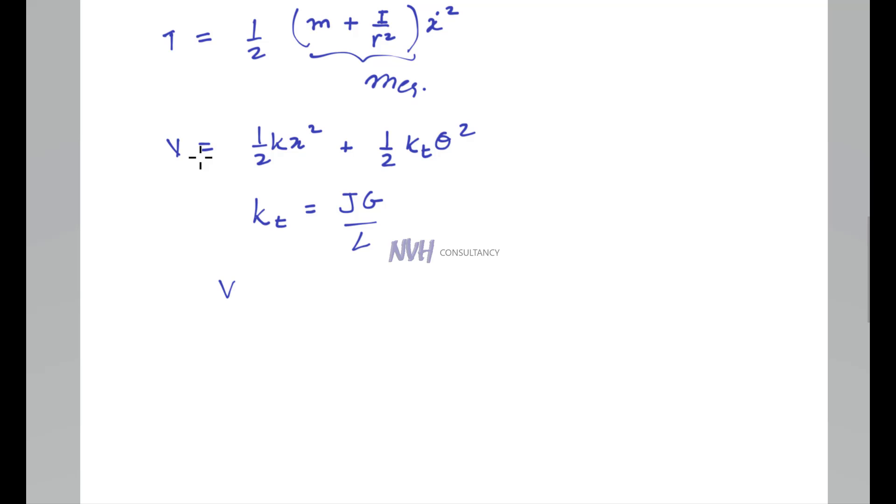Then V is equal to half K X square plus half J G over L times theta, and theta can be represented by X by R. This comes out to be half times K plus J G over L R square times X square. This is your potential energy, and this term is the equivalent stiffness.